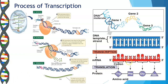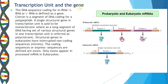This mRNA will further go for the process of translation, that is the synthesis of proteins. The DNA sequence coding for mRNA, tRNA or rRNA is defined as a gene. A cistron is a segment of DNA coding for a polypeptide. A single gene in a transcription unit is said to be monocistronic, whereas a long segment of DNA having a set of various structural genes in one transcription unit is referred to as polycistronic.